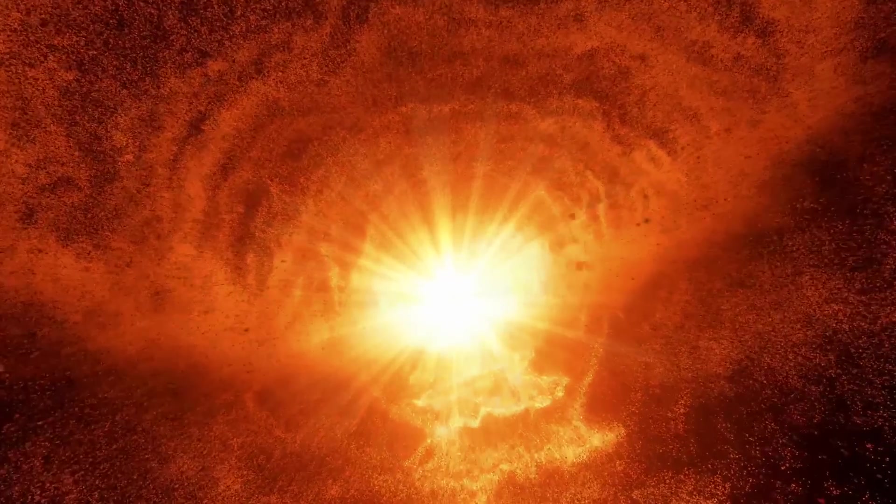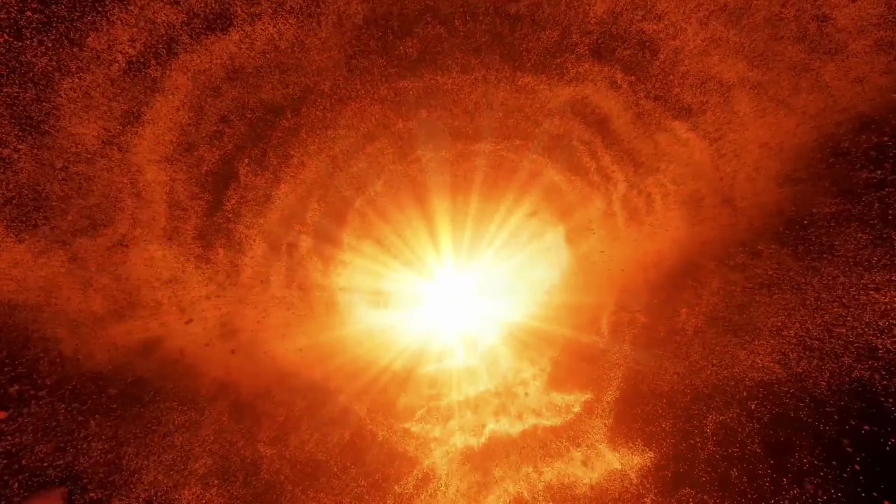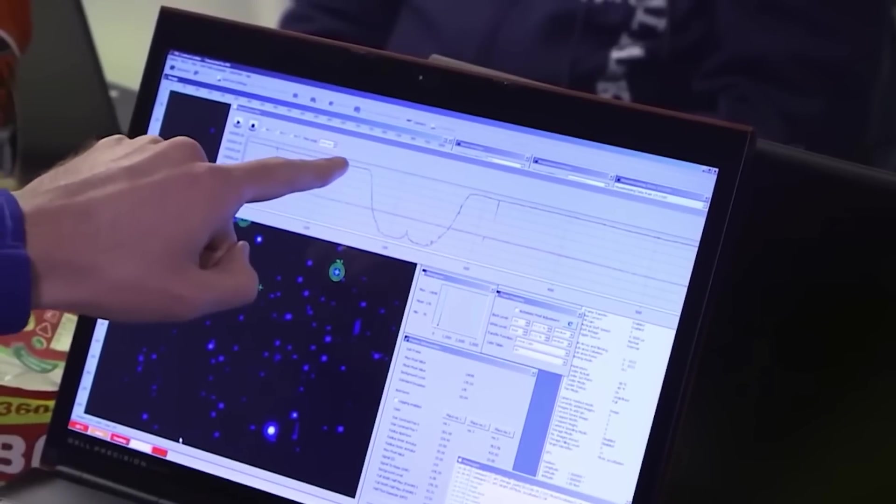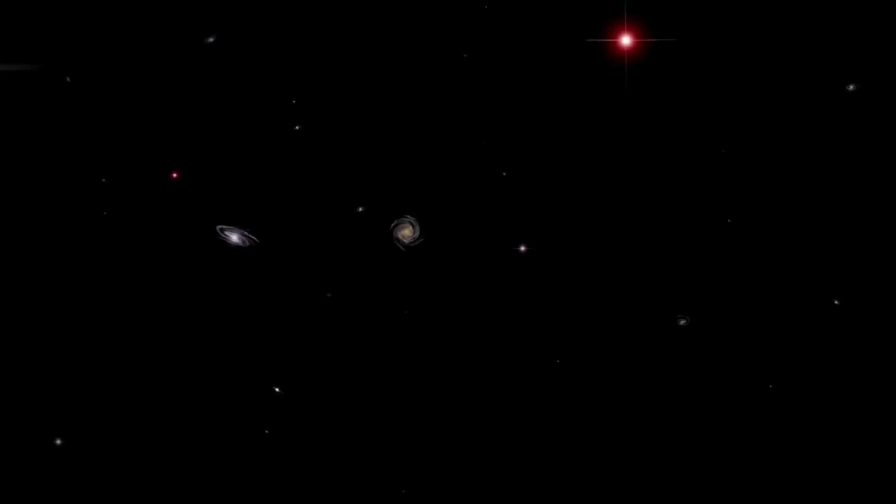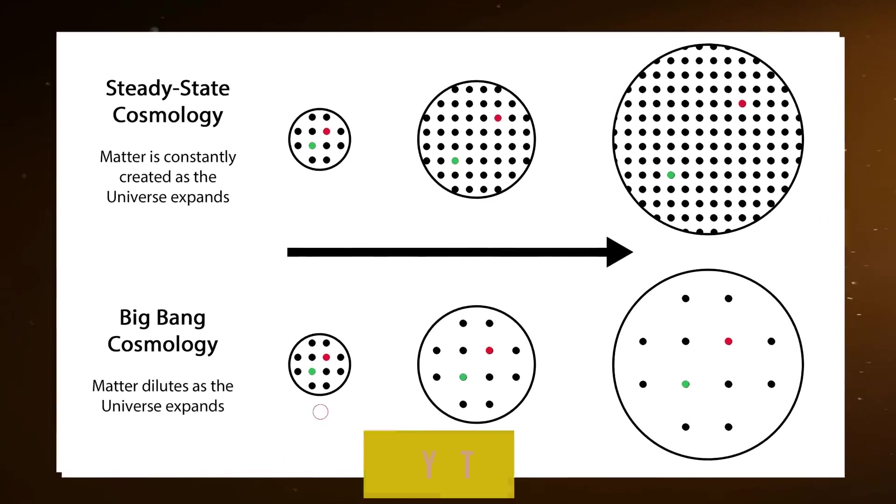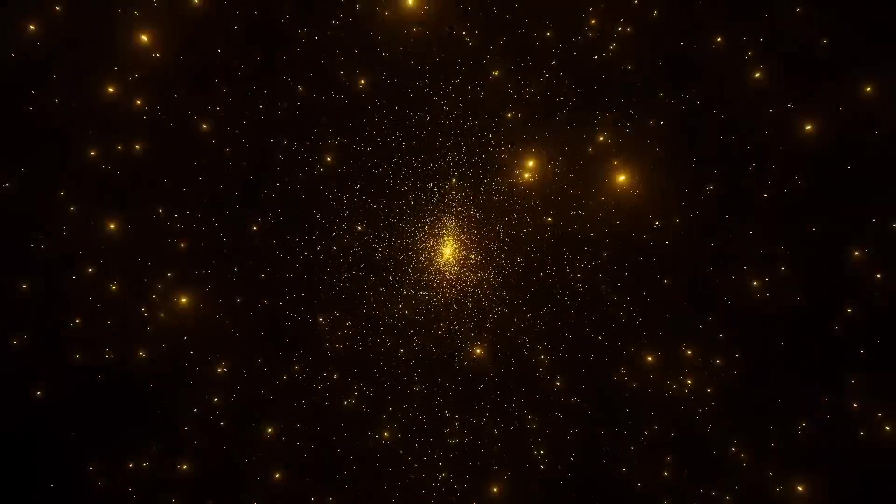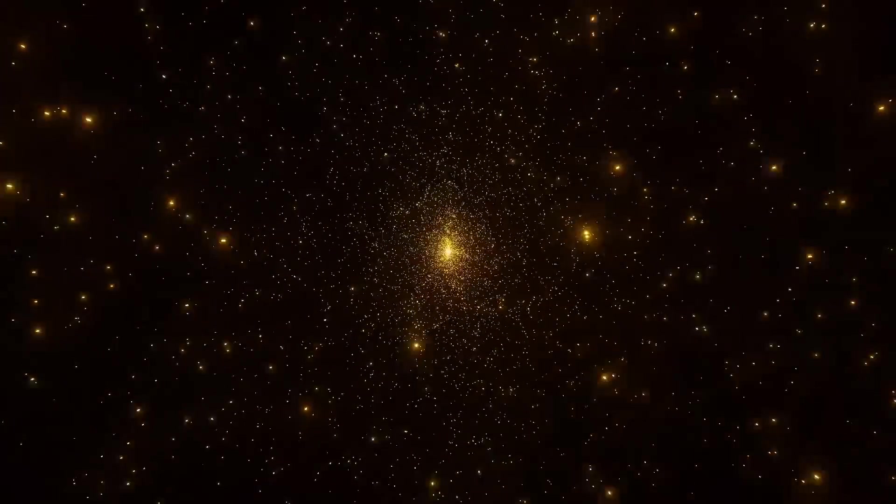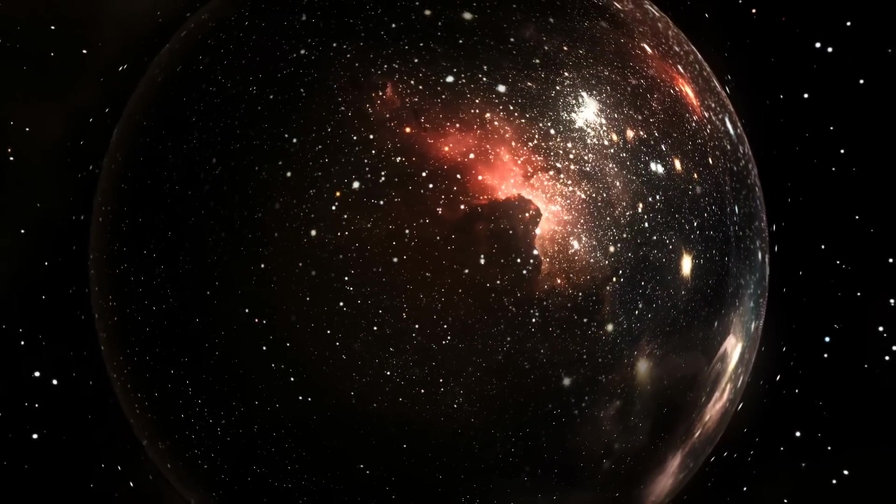Over the years, the Big Bang Theory has faced skepticism and rejection by some individuals. However, due to a lack of supporting evidence, their models did not gain widespread acceptance within the scientific community. Fred Hoyle rejected the Big Bang Theory by proposing the steady-state model of the universe, where new matter is continuously created to maintain a constant density, and the universe is eternal and unchanging.